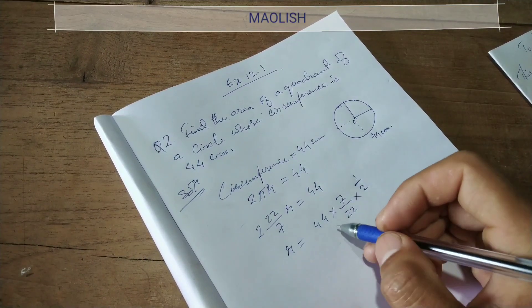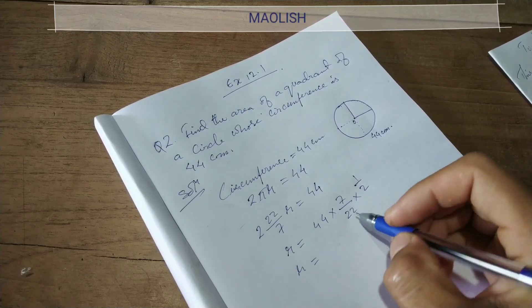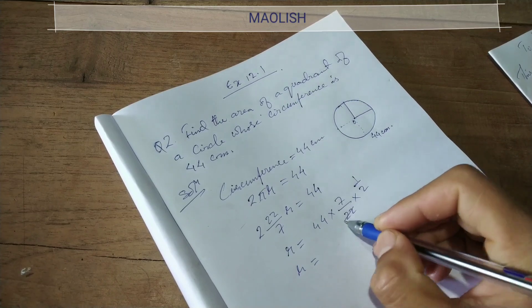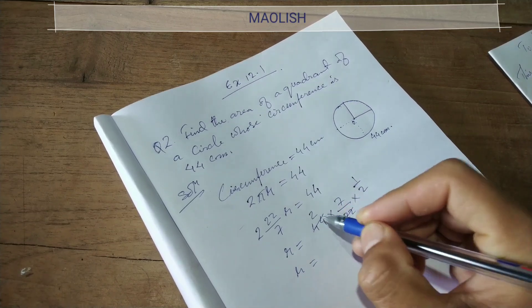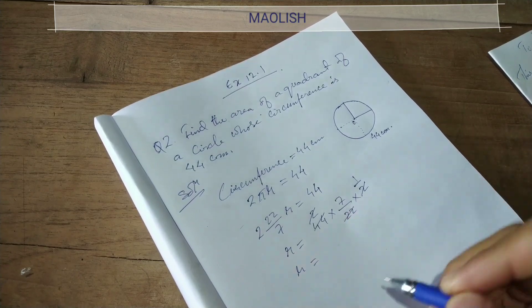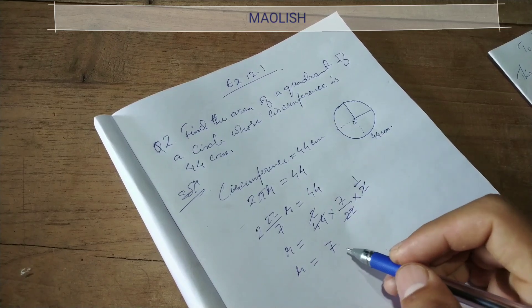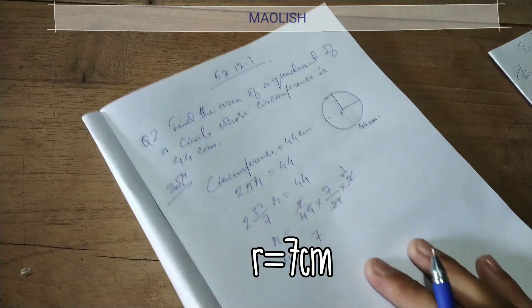r equal to 44 into 7 by 22 into 1 by 2. So r equal to 7, 7 into 1 is 7.